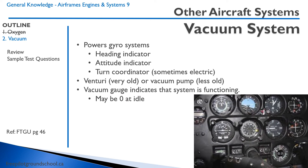The aircraft has a vacuum gauge. It indicates that the system is functioning and shows how much vacuum is being developed. It's kind of hard to find, but that's your vacuum gauge right there. This vacuum gauge may read zero when at idle — it typically reads quite low even though the gyro instruments may be working.